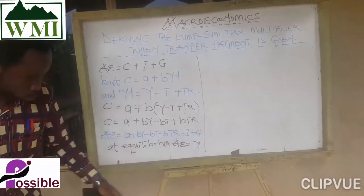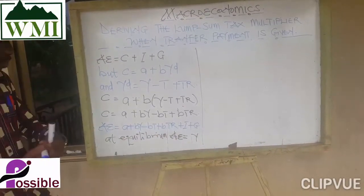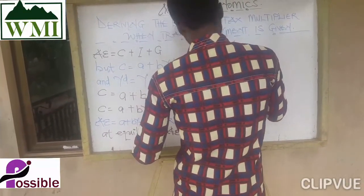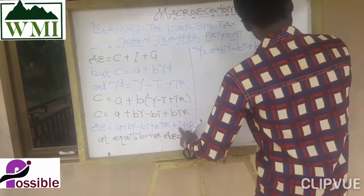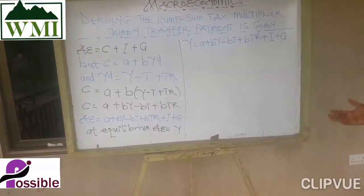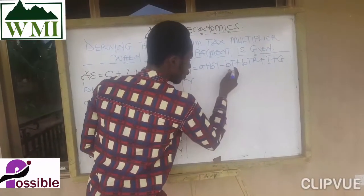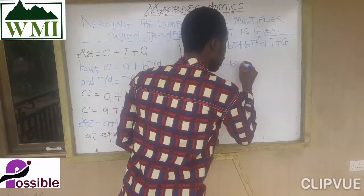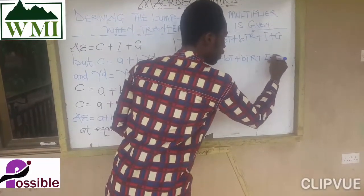Having established that aggregate expenditure equals output at equilibrium, we substitute to get: Y equals A plus BY minus BT plus BTR plus I plus G.